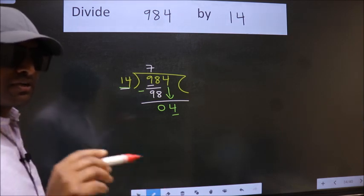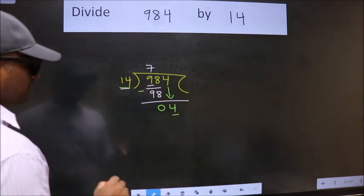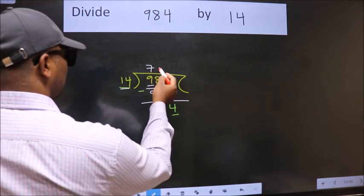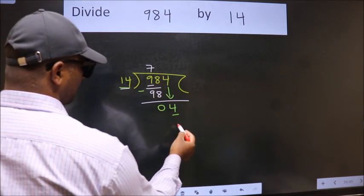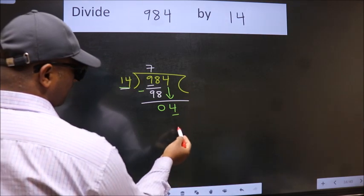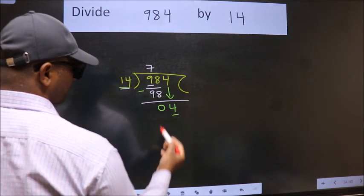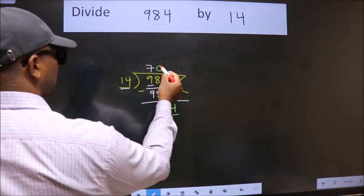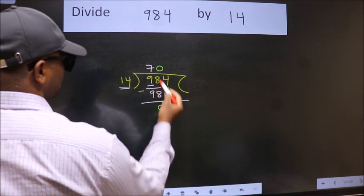Instead of that, what we should think of doing is, which number should we take here? If I take 1, we will get 14. But 14 is larger than 4. So what we do is, we take 0 here. So 14 into 0, 0.